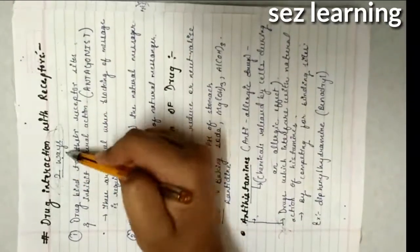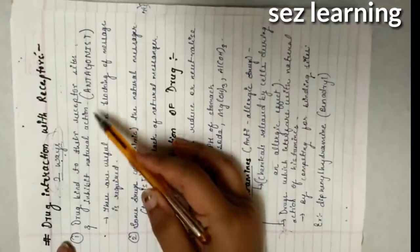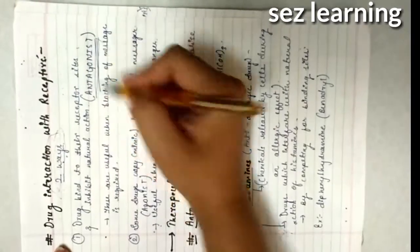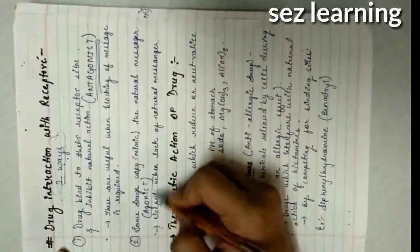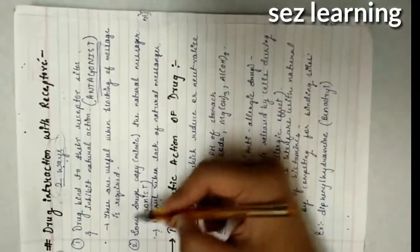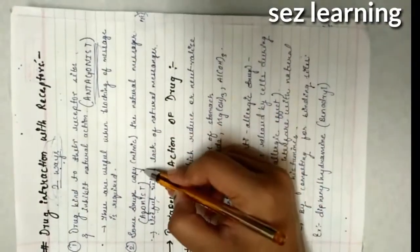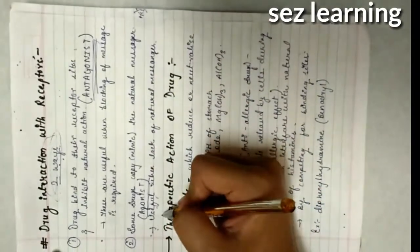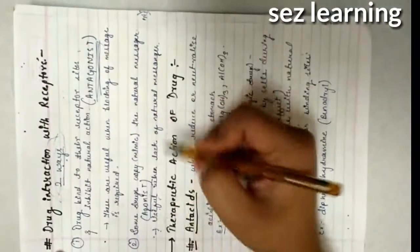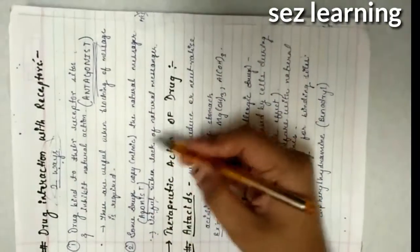Drugs interact with receptors in two ways. Some drugs bind to the receptor site and inhibit natural action - these are called antagonists. The antagonist and agonist terms are very important; many questions come on these based on their action. Antagonists come into play when blocking of a message is required.